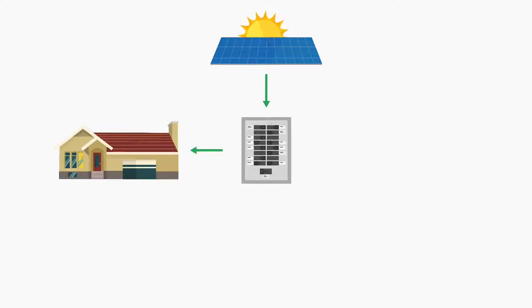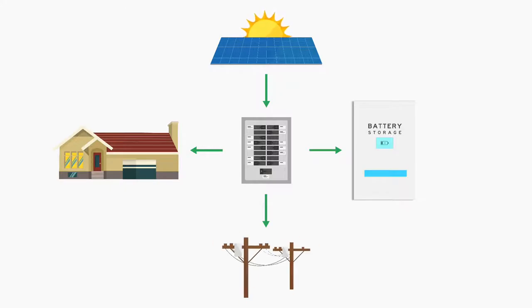You'll use some of this energy in your house, and if you have any excess energy, you'll begin to charge your battery. Once your battery is charged, any additional energy will flow back out onto the grid.